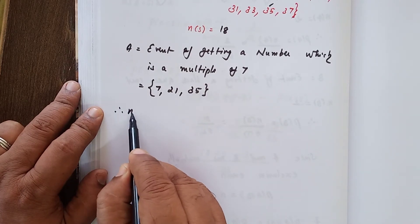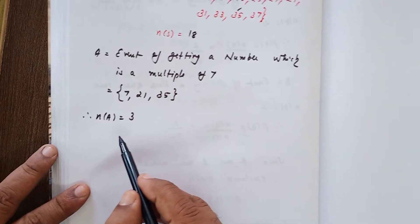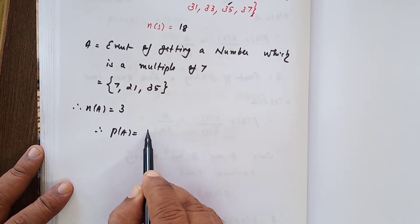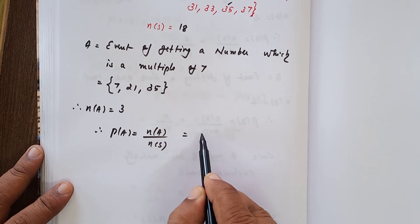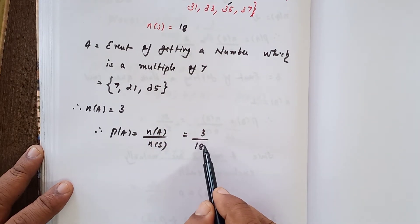Therefore, n(A) that is equal to 3 elements in A. Therefore, P(A) that is equal to n(A) divided by n(S). n(A) is equal to 3, n(S) is equal to 18. We need not simplify, let it be.